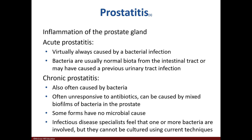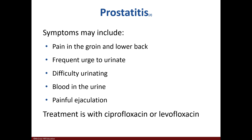Prostatitis is an inflammation of the prostate. Acute prostatitis is almost always caused by bacteria from normal microbiota. Chronic prostatitis is often caused by bacteria, although some forms don't have a bacterium as the cause. Symptoms include pain in the groin, urge to urinate, difficulty urinating, blood in urine, or painful ejaculation. Prostatitis can be treated with ciprofloxacin or levofloxacin.